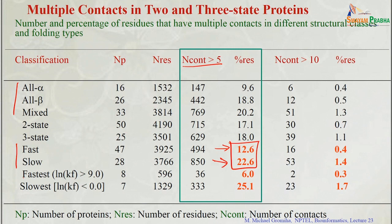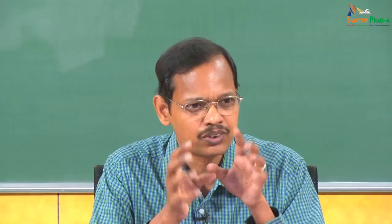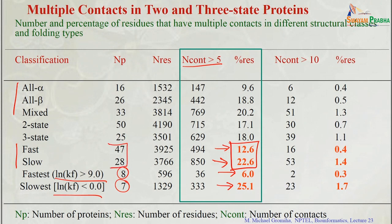Showing another example with the fastest proteins (Elan cave more than 9) and the slowest (less than 0), we have 8 examples for the fastest and 7 for the slowest. We see only 6% in the fastest and more than 25% in the slowest proteins. This clearly shows that proteins containing more residues with multiple contacts are slow folders. This analysis was done with 41 fast and 28 slow proteins.